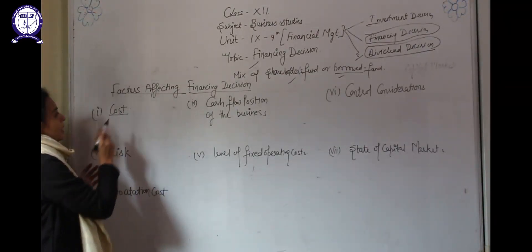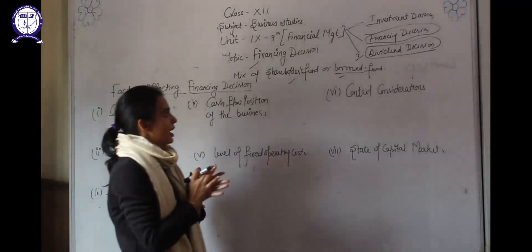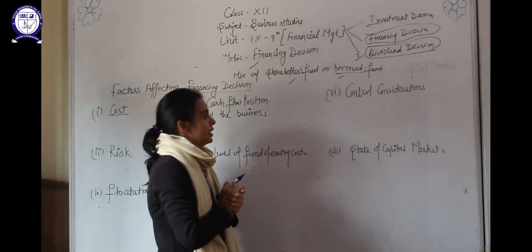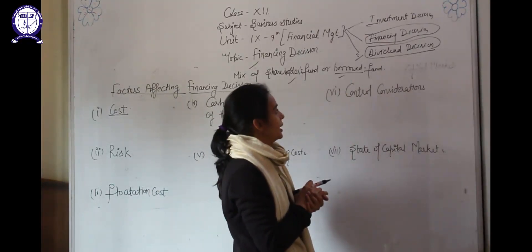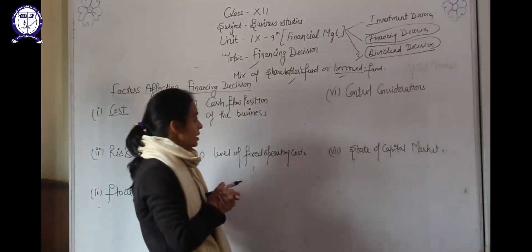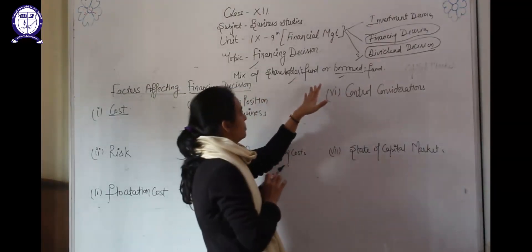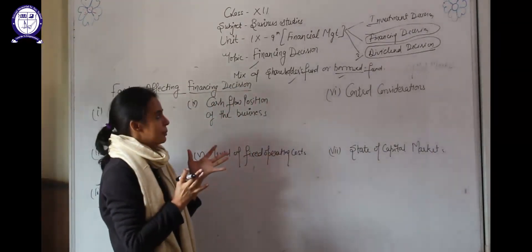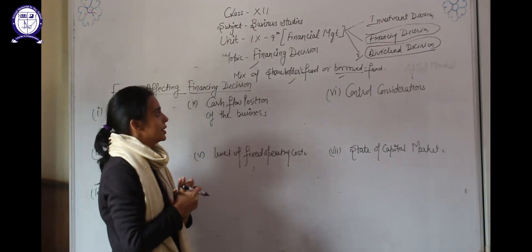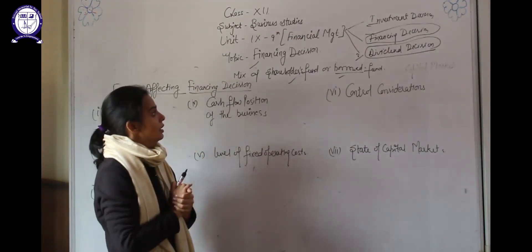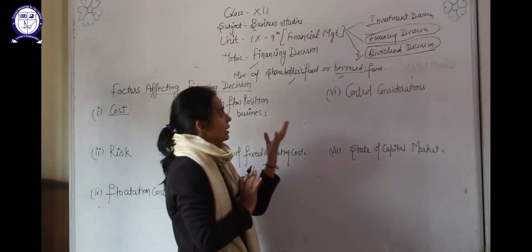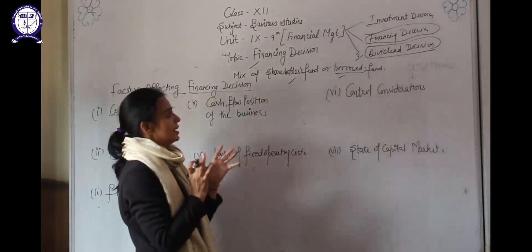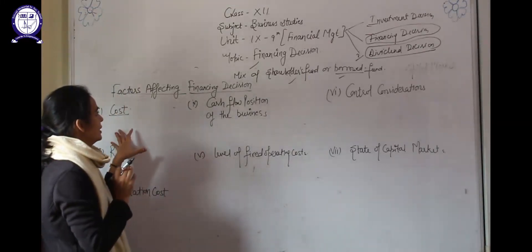First, whenever a company arranges funds from the market, they have to pay something — on shares they pay dividend, and on debt or borrowed fund they pay interest. Comparatively, borrowed funds are cheaper than shareholder funds because shareholders take the maximum risk, so the company has to pay a higher rate of dividend. Debenture holders bear less risk, so they receive a lower rate of interest.